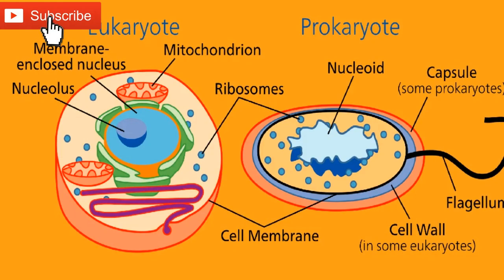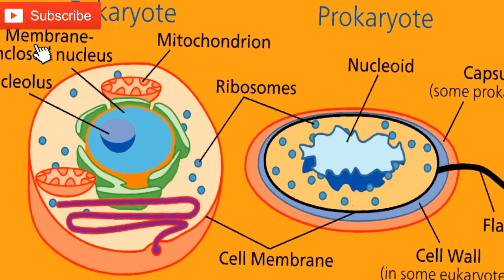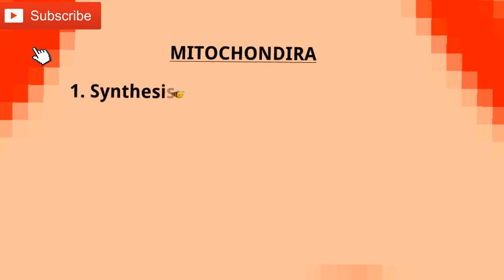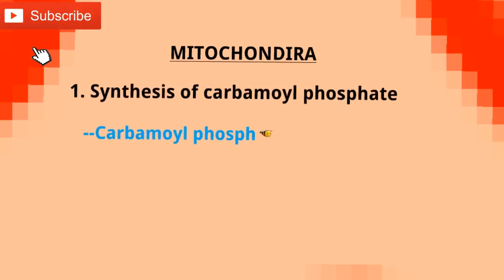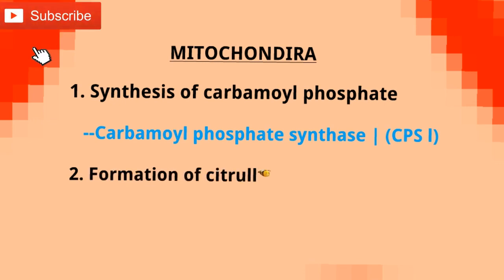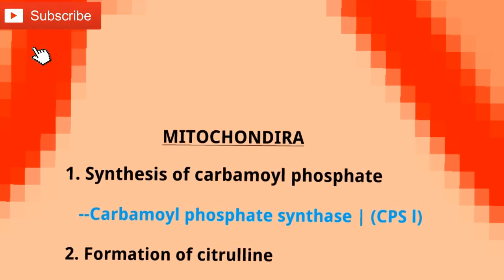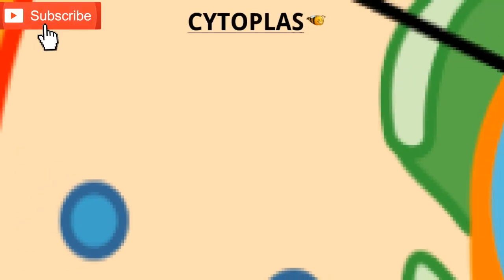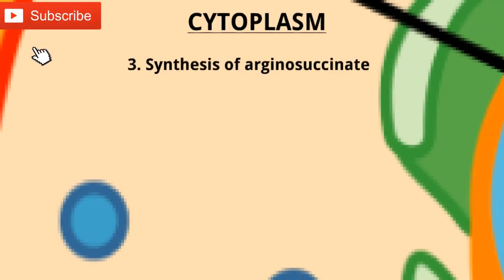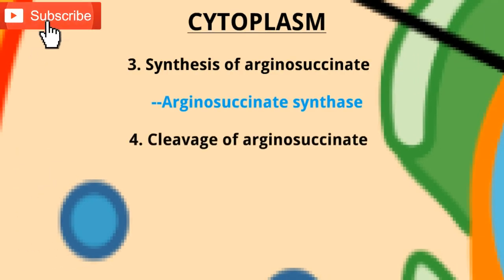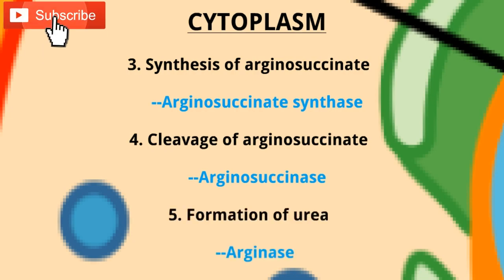Let us see the names of all enzymes involved in various steps. In mitochondria, step 1 is catalyzed by carbamoyl phosphate synthase-1, very commonly known as CPS-1. Step 2 by ornithine transcarbamoylase. While in cytosol, step 3 by arginosuccinate synthase. Step 4 by arginosuccinate lyase, and step 5 by arginase.